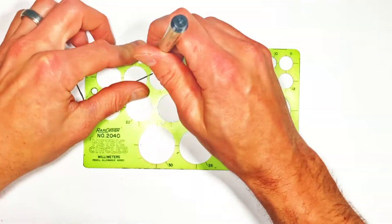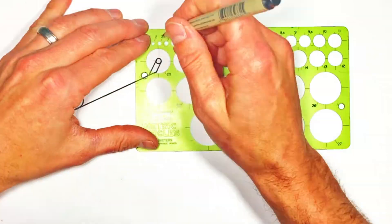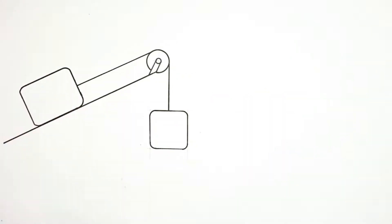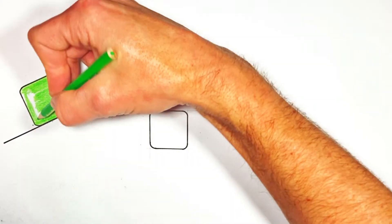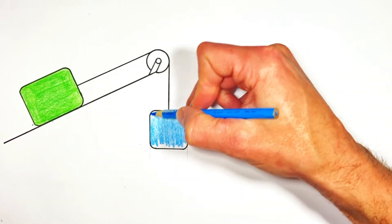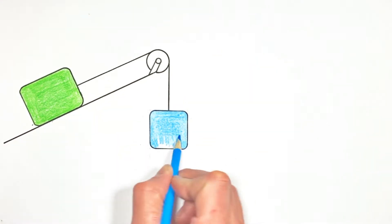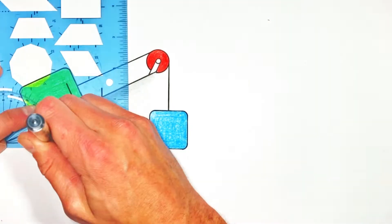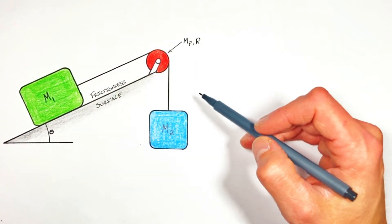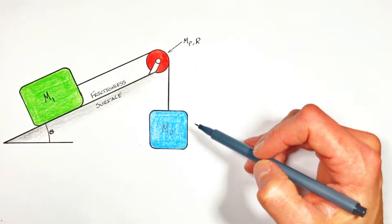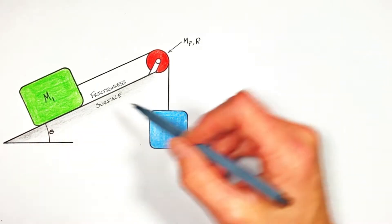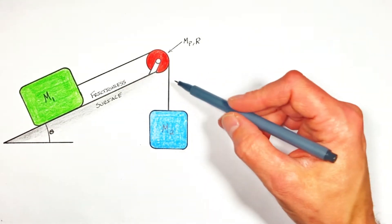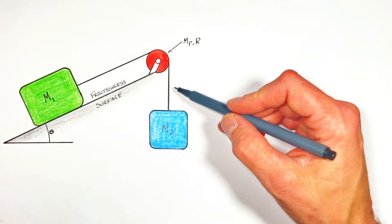Today we're taking a look at another classic problem where we've got a block sitting on a tilted surface, and that block is connected by a string that runs up over a pulley to another hanging block. I'm going to show you how to use force in order to solve for the acceleration of each of these blocks, as well as the tension in both sides of the string.